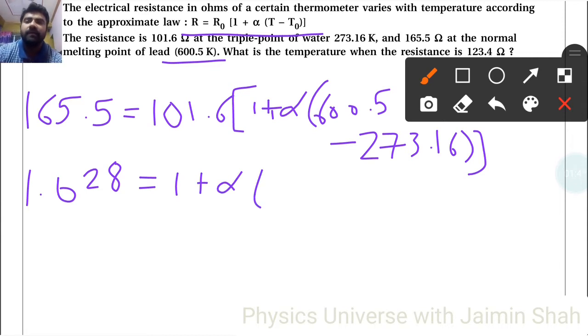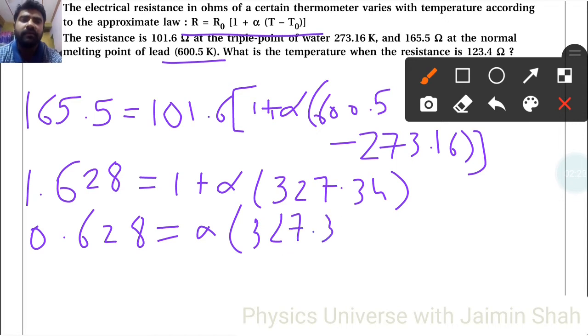165.5 ÷ 101.6 = 1.628 = 1 + α(327.34). So 0.628 = α(327.34). Therefore α = 0.628 ÷ 327.34 = 1.92 × 10⁻³. That's the alpha for our given material.